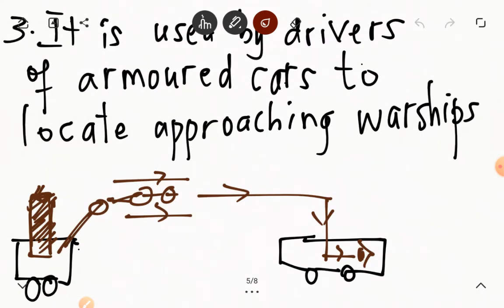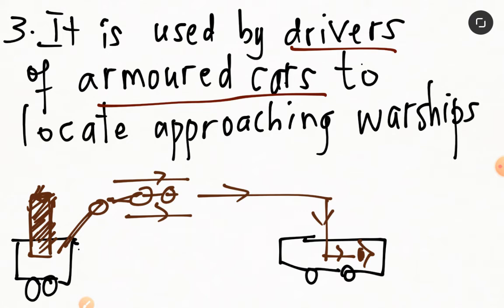Then thirdly, we say that it is used by drivers of armored cars to locate approaching warships. So here we have two armored cars. We have A and we have B. So let's say the enemy is at A. Then the soldier in B, using his mirror periscope position well, can actually locate the armored car A, because light rays from the armor cars are directed. They are directed into the mirror periscope.